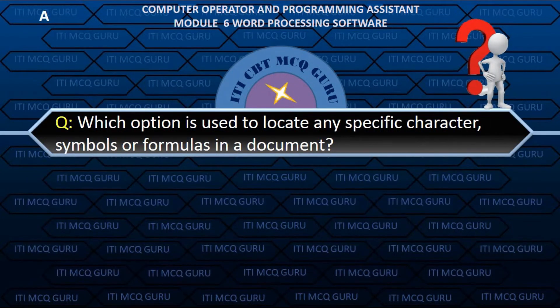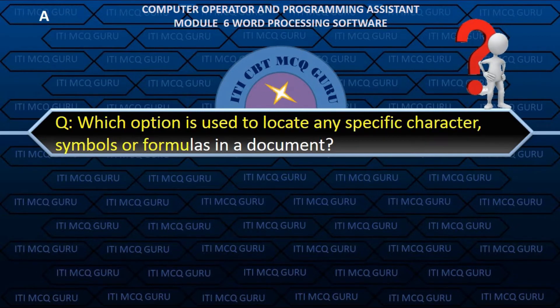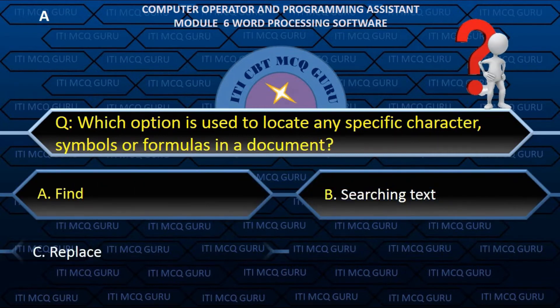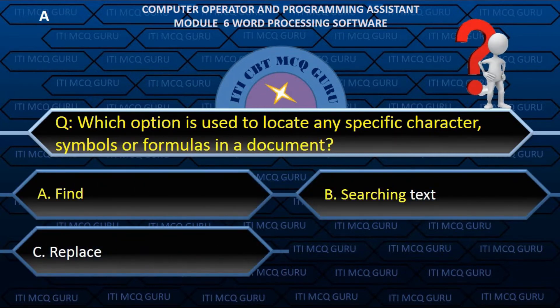Which option is used to locate any specific character, symbols or formulas in a document? A. Find.